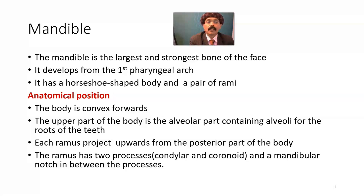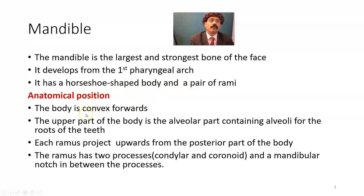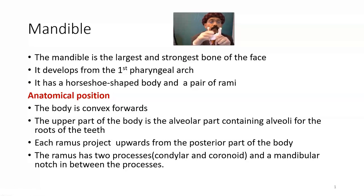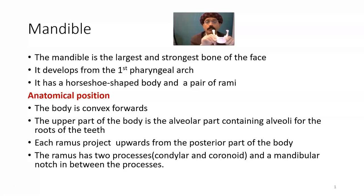The mandible is the largest and strongest bone of the face. It develops from the first pharyngeal arch. It has a horseshoe-shaped body and a pair of rami. The body is convex forward. The upper part of the body is the alveolar part, containing the alveoli for the roots of the lower jaw teeth. The mandible is also called the lower jaw.